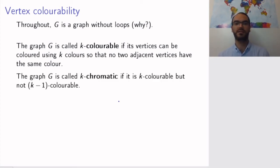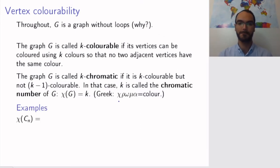If I do use all my k colors, I call the graph k-chromatic. So a k-chromatic graph is a k-colorable graph that is not (k-1)-colorable. In other words, it's k-colorable and k is the smallest number for which it is k-colorable. And the number k, the smallest possible number of colors, is called the chromatic number and denoted by the Greek letter chi. It all comes from the Greek word chroma meaning color.